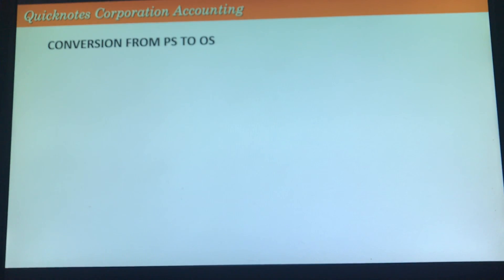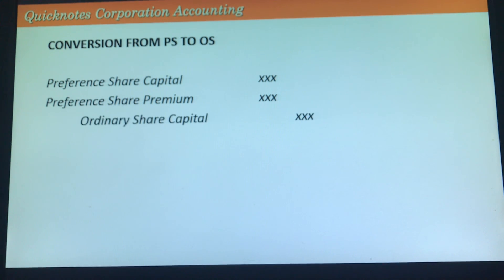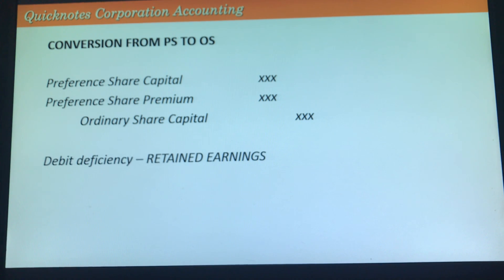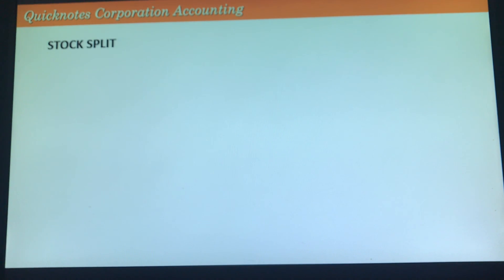For converting preference shares to ordinary shares, debit preference share capital — number of preference shares converted multiplied by par value — and the premium attributable to those preference shares, then credit ordinary share capital based on the number of equivalent ordinary shares received. If there is a debit deficiency, debit retained earnings. If there is a credit deficiency, credit paid-in capital from conversion of preference shares to ordinary shares.